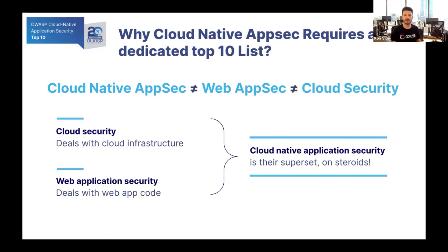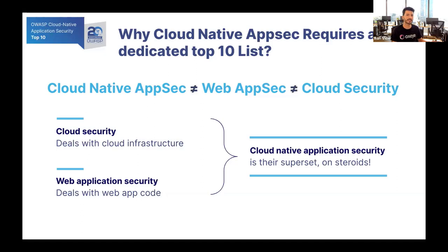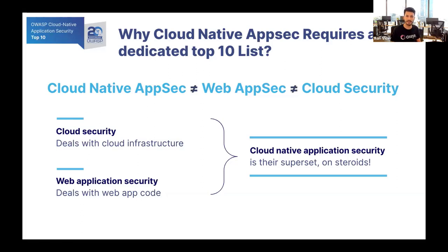Modern applications are usually built as cloud native applications — this is the de facto standard. When we are talking about cloud native application security, we are not talking about cloud security or web application security. We're actually talking about the combination between them. In cloud security, we are securing the infrastructure. And web application security — well, cloud native applications are not necessarily web applications. When we are talking about their superset, the combination between them, it introduces a new type of security.